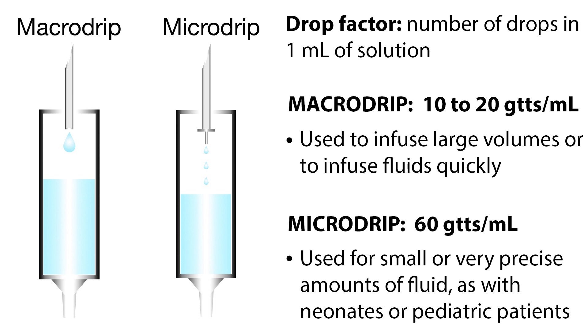Macro drip and micro drip refers to the diameter of the needle where the drop enters the drip chamber. Macro drip tubing delivers 10 to 20 drops per milliliter, and is used to infuse large volumes or to infuse fluids quickly.